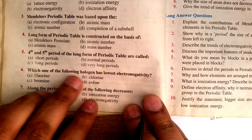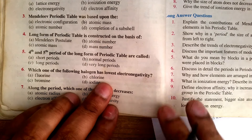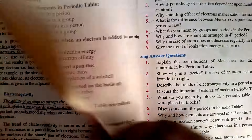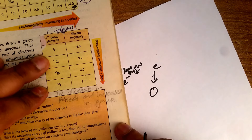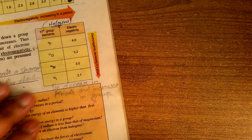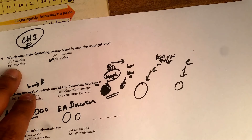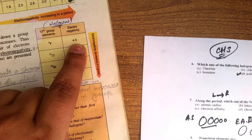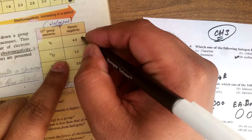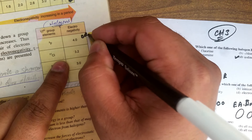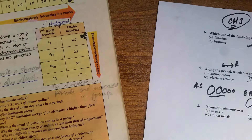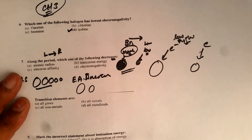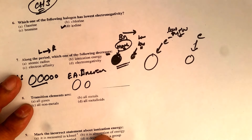They are asking: which one of the following has the lowest electronegativity? The options are fluorine, chlorine, bromine, and iodine. Iodine has the most low electronegativity — you are looking at 2.7 — while fluorine's electronegativity is 4.0. This is a board MCQ, so keep it memorized.